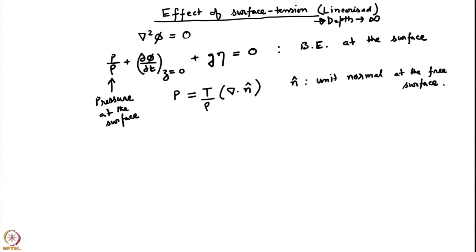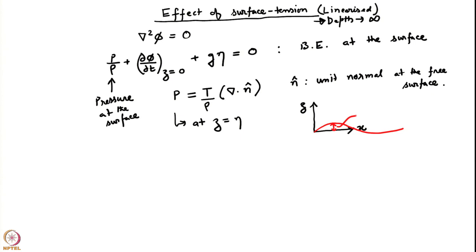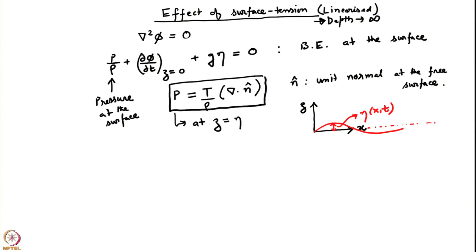This boundary condition gives the pressure at z = η, the free surface. Recall our coordinate system: x is horizontal, z is vertical, and we are doing a two-dimensional approximation. The free surface displacement from the base state is η(x, t). In the base state the interface is flat, and because this is linearized, all quantities are computed at z = 0, as we have seen earlier. This condition has to be plugged into the Bernoulli equation; this pressure is the pressure at the surface.